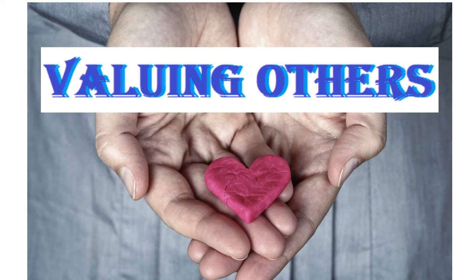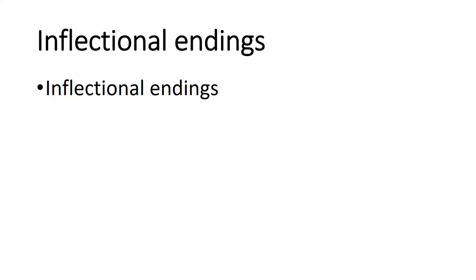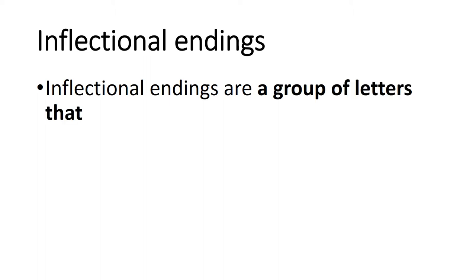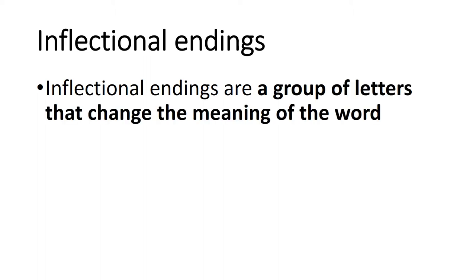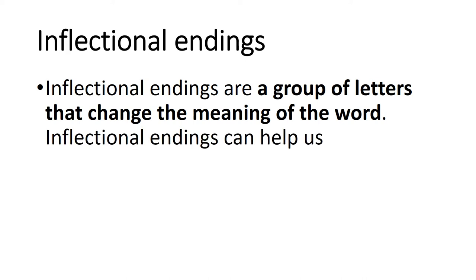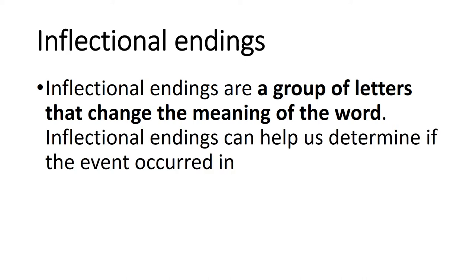Assalamualaikum my dear students. हम comprehension कर रहे हैं Chapter No. 6 Valuing Others. आज हम उसमें बात करेंगे Inflectional Endings. Inflectional Endings are a group of letters that change the meaning of the word. Inflectional Endings can help us determine if the event occurred in the past or present. Inflectional Endings यह letters का एक group हैं जिससे word का meaning तबदील हो जाता है। इससे हमें पता चलता है कि जो event है वो past में हुआ है या present में।